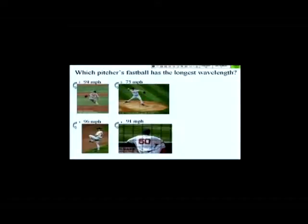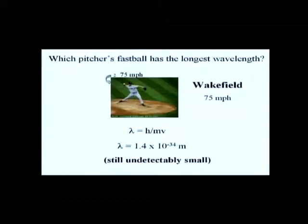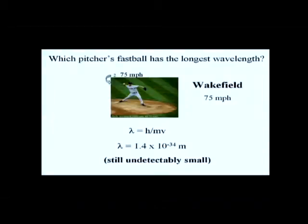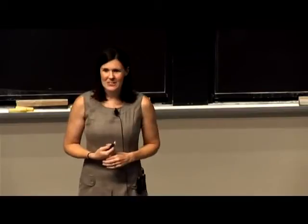Tim Wakefield, currently on the DL, throws a lot slower because he has that tricky knuckleball — he doesn't need to throw as fast. Then we have Beckett, who can get up to 96 on a regular day, and Timlin at about 91 miles per hour, one of our relievers. It looks like people did not forget the relationship between wavelength and speed. The correct answer is Wakefield, because there's an inverse relationship between how fast a particle is going and what its wavelength is. Wakefield has the largest wavelength — but in terms of being significant, we're still not even close; it's still undetectably small.